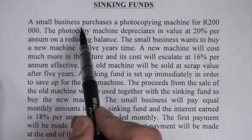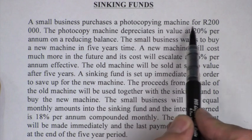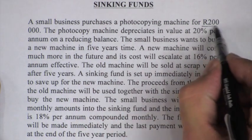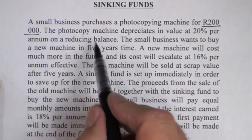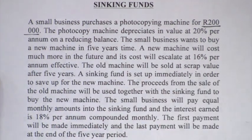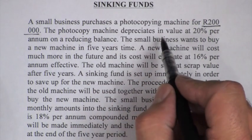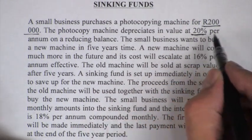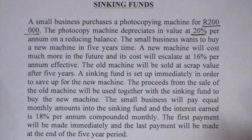A small business purchases a photocopy machine for 200,000 Rand. Remember that is the purchase price, the 200,000 Rand. The photocopy machine depreciates in value at 20% per annum on a reducing balance.